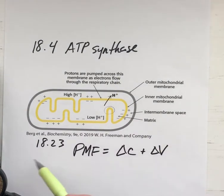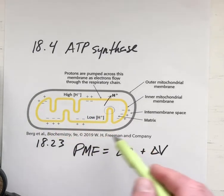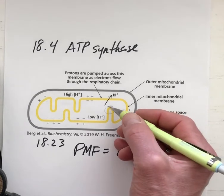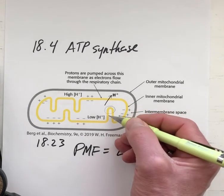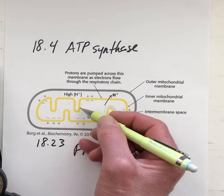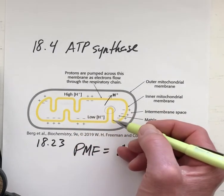In this first figure, 18.23, we see a cartoon sketch of the mitochondria. This is where ATP synthase is located on the inner mitochondrial membrane, at these points of curvature, the cristae in the inner mitochondrial membrane.